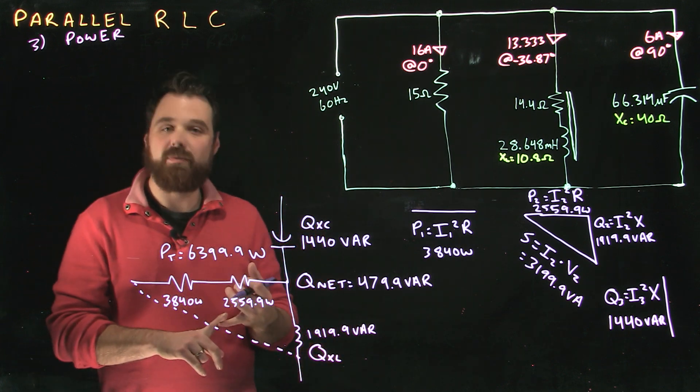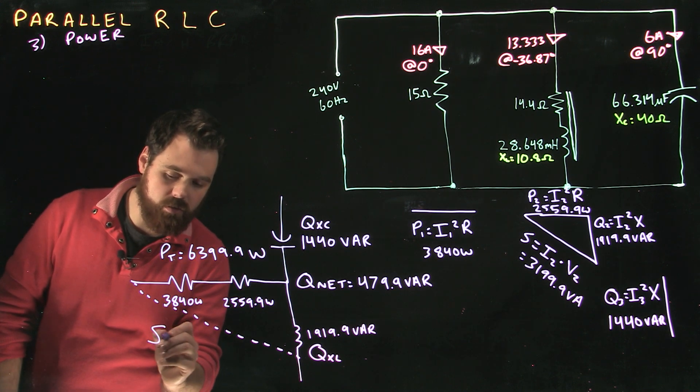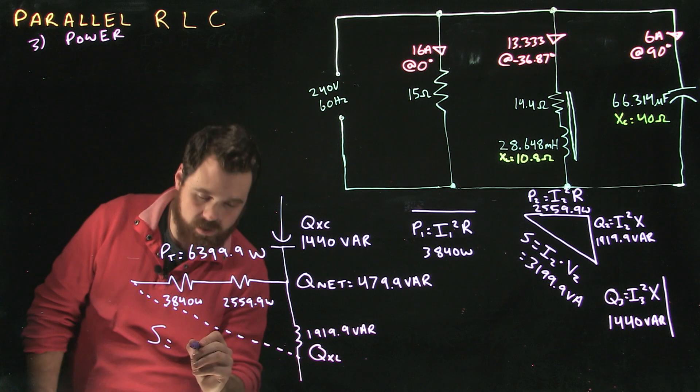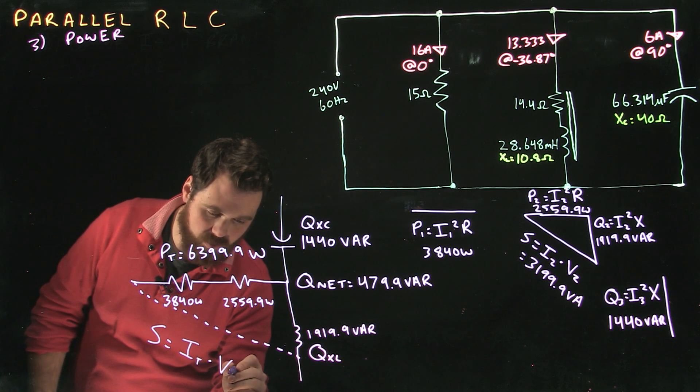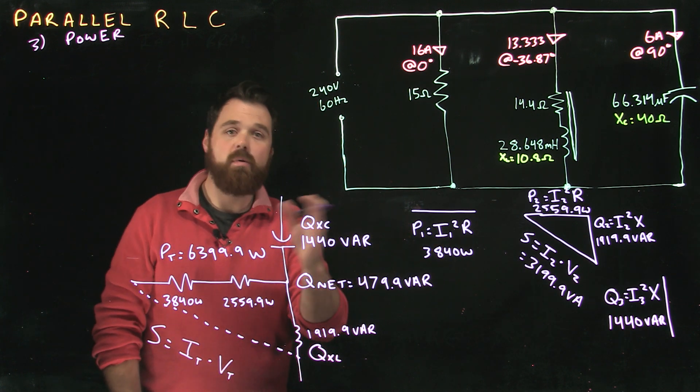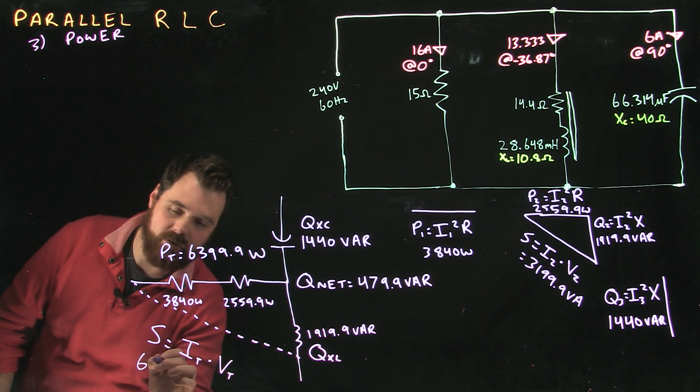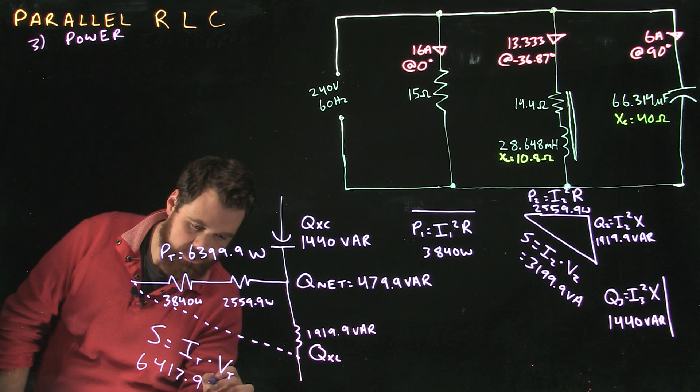I can do Pythagorean's theorem, and I can solve for my S if I want. Or if I want, I can also go I total times V total or E total of the circuit, and I can get it that way as well. Whichever way I do it, I should end up with 6417.9 VA.